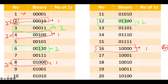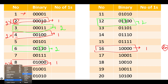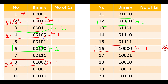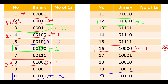Let's look at 5. The number of ones in 5 happens to be 2. Performing the left shift operation gives us 10, and the number of ones remains the same — 2. In 20, the number of ones again remains 2. If you have understood this much, you have understood 50 percent of the algorithm.